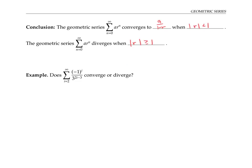Let me write this down as a conclusion. The geometric series converges to a over one minus r for r between negative one and one — equivalently, the absolute value of r less than one. And it diverges for the absolute value of r greater than or equal to one. Let's use this fact in our example. Remember that we decided this was a geometric series with common ratio r equal to negative one ninth.